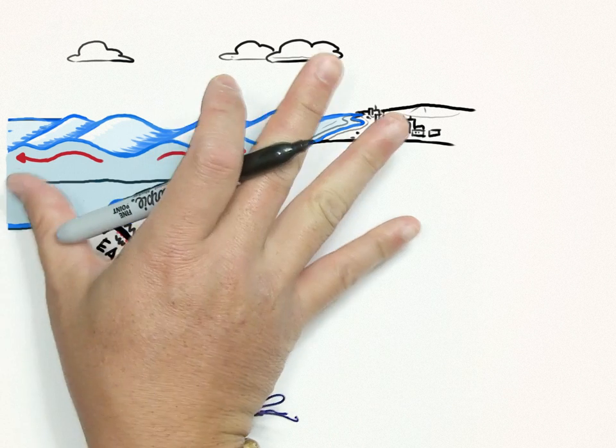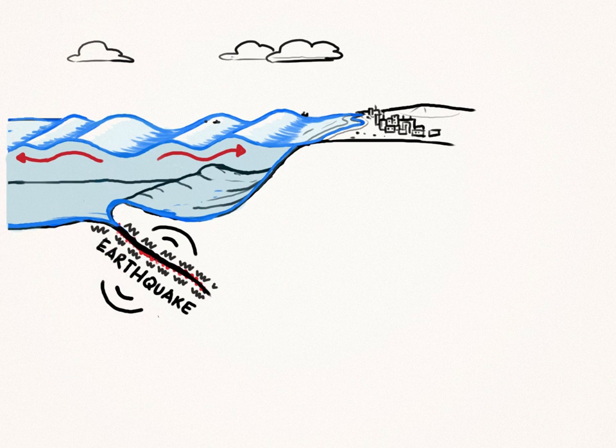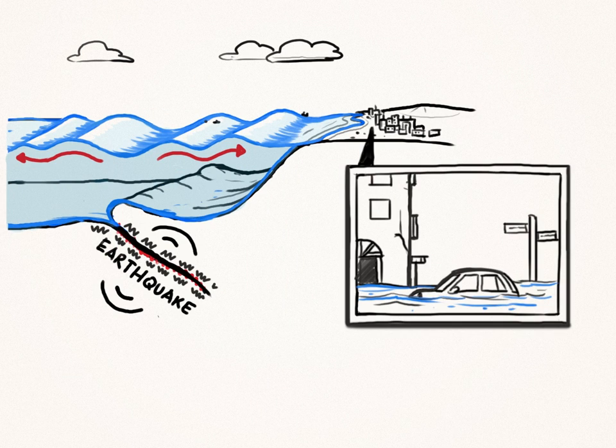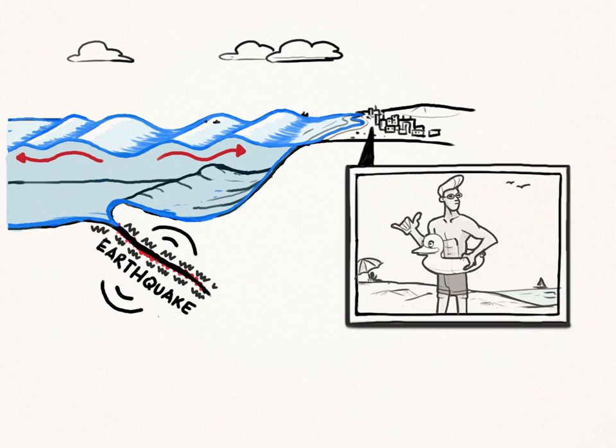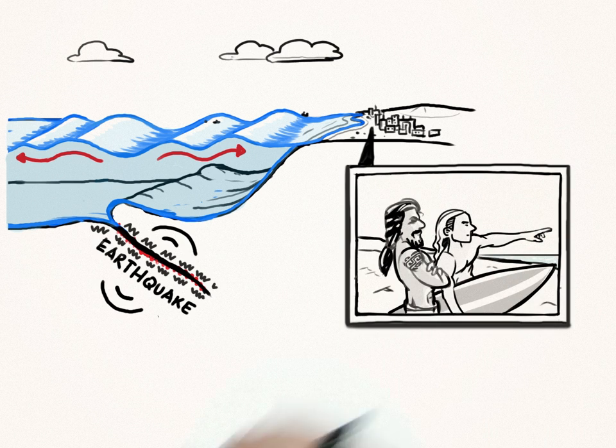These powerful, fast-rising floodwaters can smash everything in their path. Even small tsunamis can be dangerous, especially to swimmers, surfers, and boats in harbors.